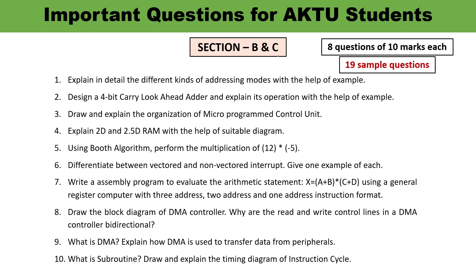Now let us talk about Sections B and C. In Section B you will get 5 questions and have to attempt 3, while in Section C you have to attempt all 5 questions with internal choice. In total, you have to attempt 8 questions, and each question is of 10 marks. I have listed out 19 sample questions which are very important — out of the 15 available questions across both sections, you have to attempt 8. All the questions you must have studied, so just go through them.